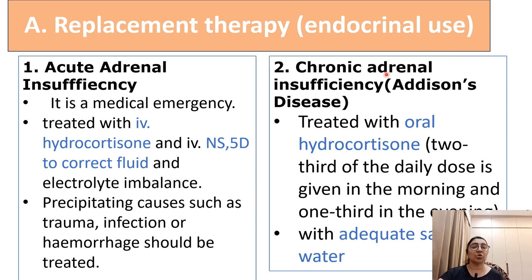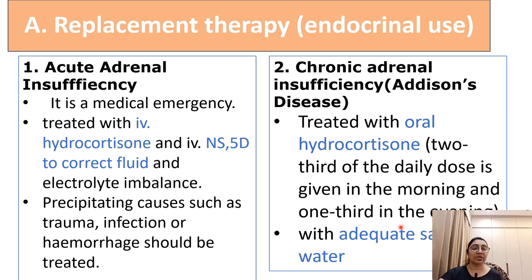Second is chronic adrenal insufficiency, that is Addison's disease, and it can be treated by oral hydrocortisone. The dose of oral hydrocortisone is high so it can be divided into two doses. Two-thirds of the total dose is given in the morning and one-third dose is given in the evening, with adequate salt and water replacement.